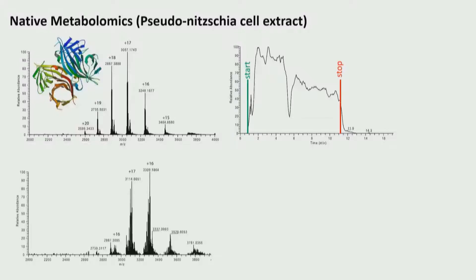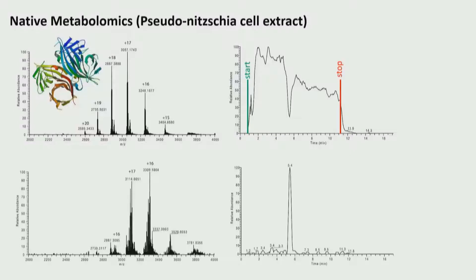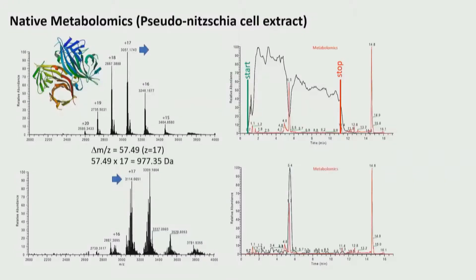When we look at the mass spectra at that given time point, we see that it's actually just shifting by a particular mass. If we make an XIC from this new mass, we see that it fits perfectly in this window. Since we have the same gradient on the same machine for our metabolomics run, we can overlay the data.